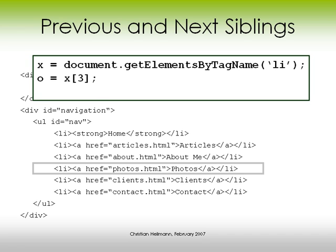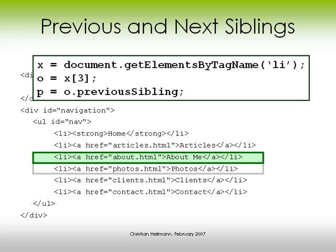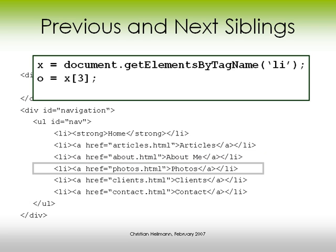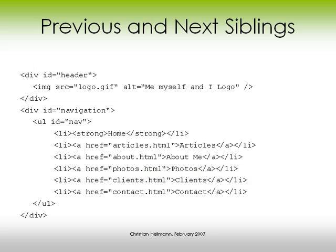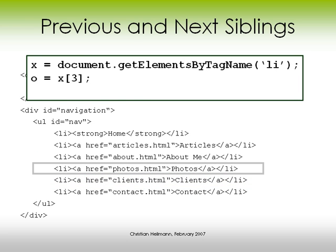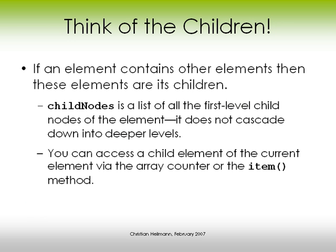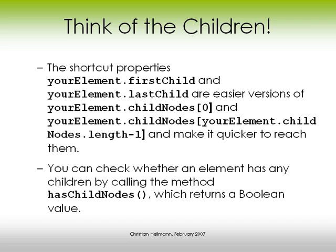In our case we go to the 'photos' li and we can say give me the previous sibling, which is 'about me', or give me the next sibling, which is 'clients'. You could also get the element that contains this one using parentNode. If an element contains other elements, those become its children. There is a property called childNodes, which is an array containing all the child node elements on the first level inside that element.